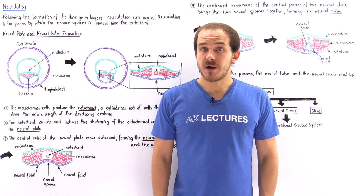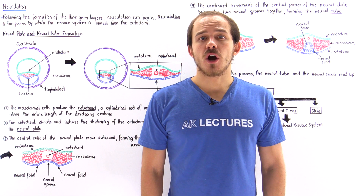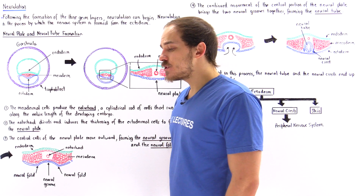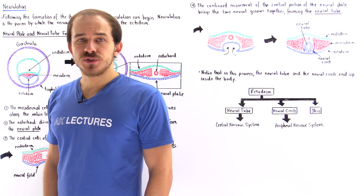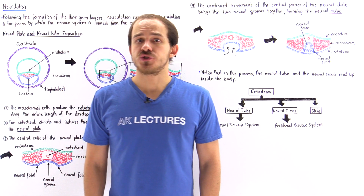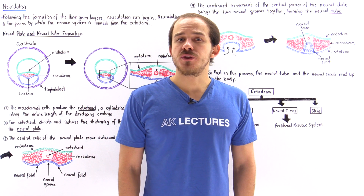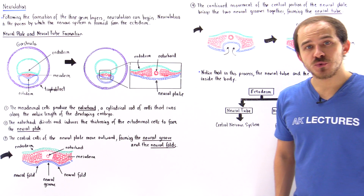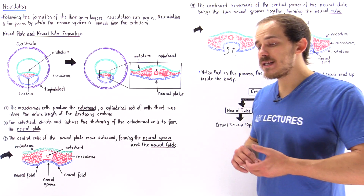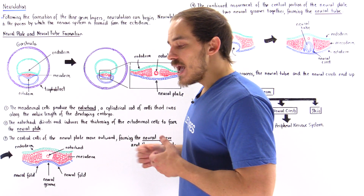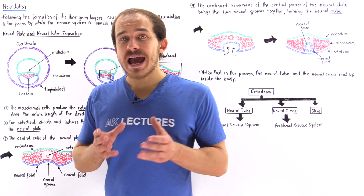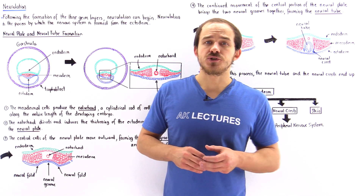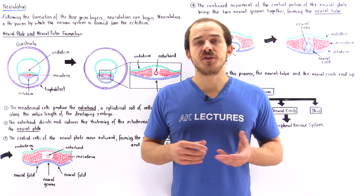Gastrulation is the process by which the three different germ layers are formed within the developing human embryo. As soon as the germ layers are formed, they can begin producing the different types of structures, organs, and systems found within the human adult organism. The first type of system produced during embryological development is the nervous system, and the process by which the ectoderm germ layer forms the nervous system is known as neurulation. This will be the focus of this lecture.